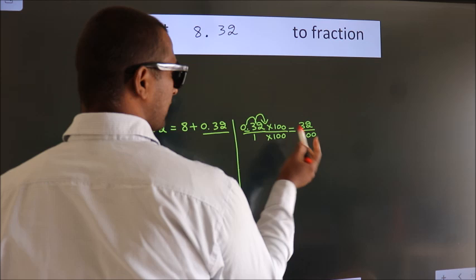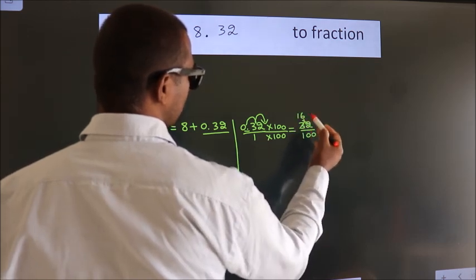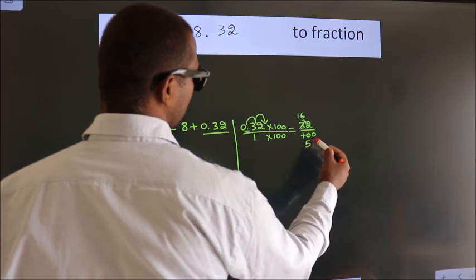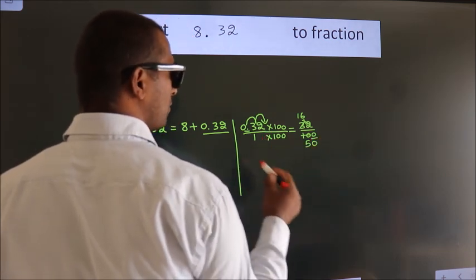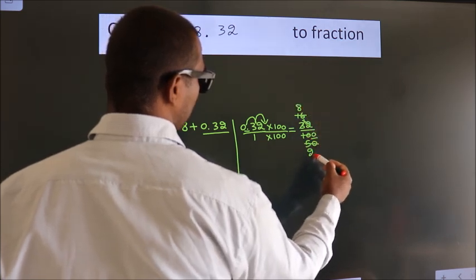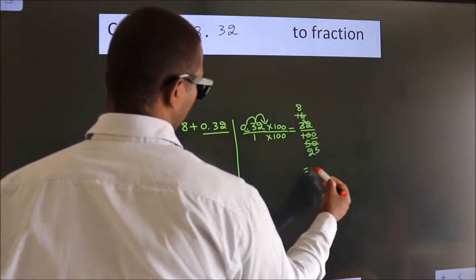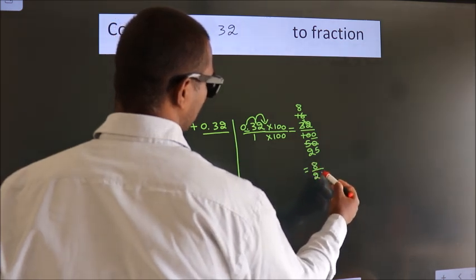Now cancel with 2. 2 1's, 2 6's, 2 5's. This 0 as it is down. Cancel with 2 again. 2 8's, 2 25's. So the fraction we got is 8 by 25.